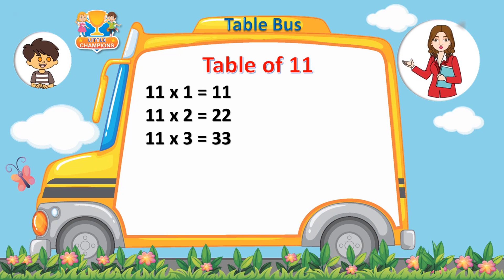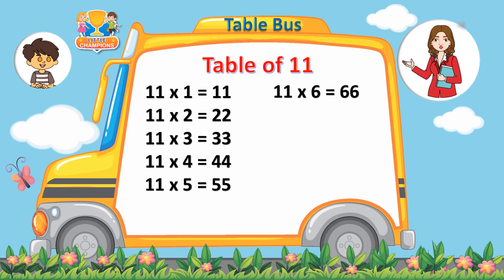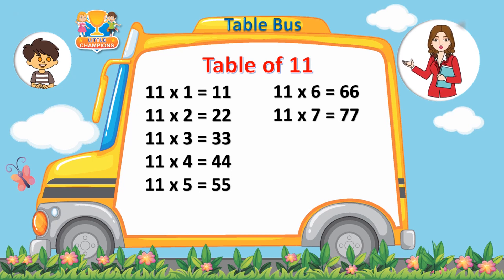11 threes are 33, 11 fours are 44, 11 fives are 55, 11 sixes are 66, 11 sevens are 77.